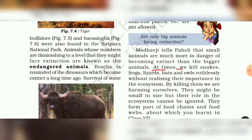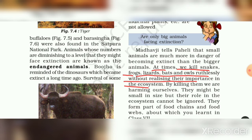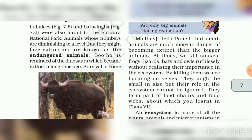At times we kill snakes, frogs, lizards, bats, and owls rootlessly without realizing their importance in the ecosystem. So snakes, frogs, lizards, bats, and owls — without knowing their importance, we kill them, and in doing so, we are actually harming ourselves.